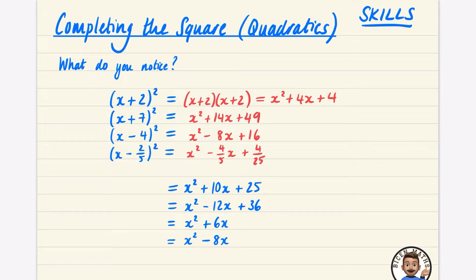What do we notice? The last term is simply the square of whatever number appears in the bracket: 2 squared is 4, 7 squared is 49, negative 4 squared is 16 (remember a negative times a negative is positive), and negative 2 over 5 squared is 4 over 25.